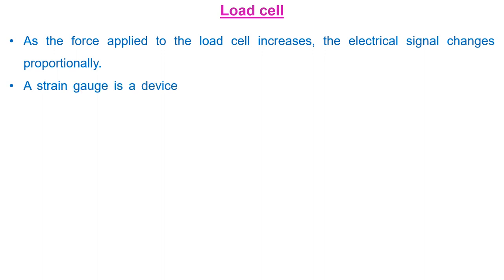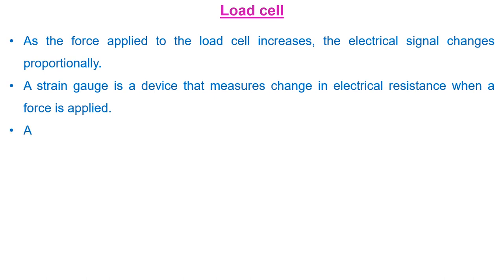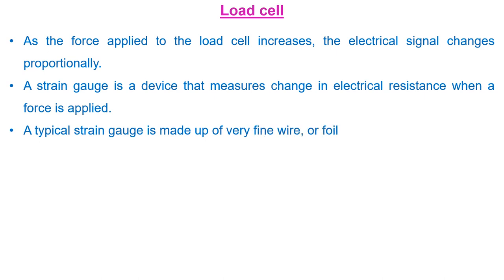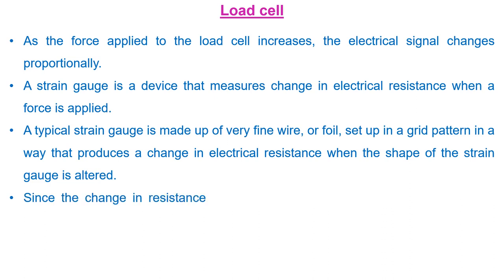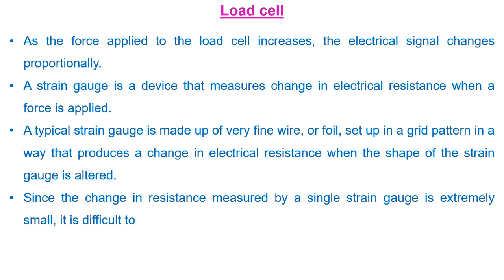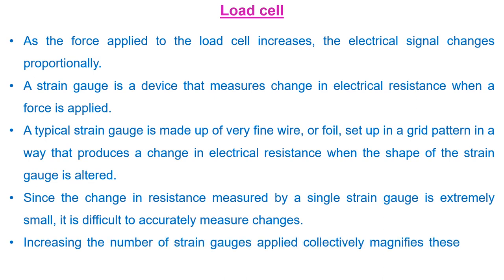A strain gauge is a device that measures change in electrical resistance when a force is applied. A typical strain gauge is made up of very fine wire or foil set up in a grid pattern, in a way that produces a change in electrical resistance when the shape of the strain gauge is altered. Since the change in resistance measured by a single strain gauge is extremely small, it is difficult to accurately measure changes. Increasing the number of strain gauges applied collectively magnifies these small changes into something more measurable.